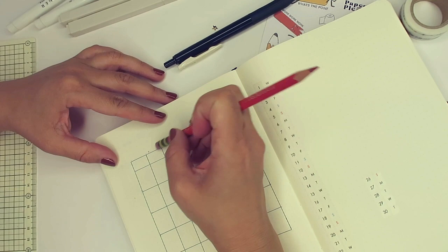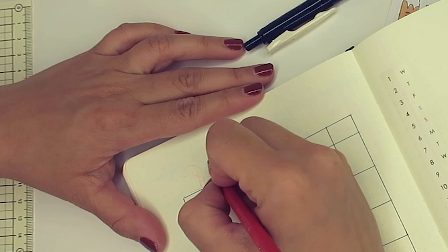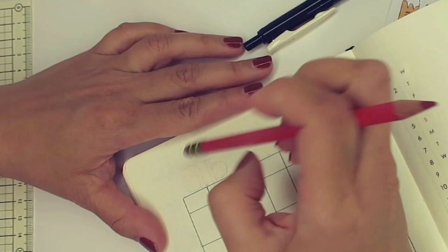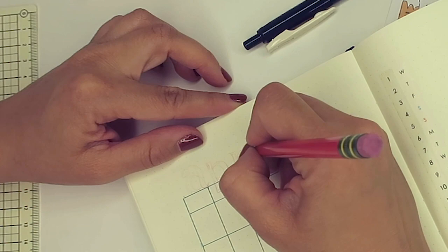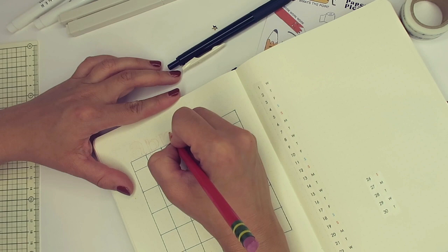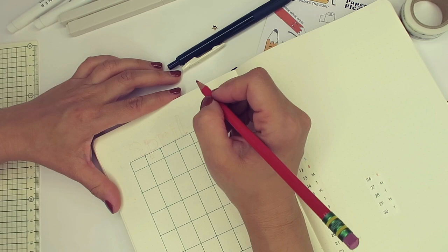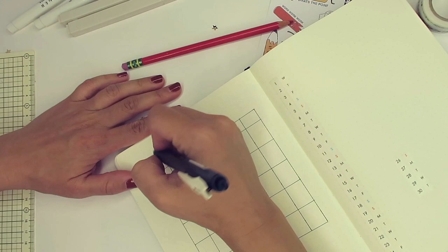I am using the Leuchtturm 1917 basic black journal, and my pen is the Sarasa vintage green color. I don't know if it's called vintage green, but it's green, and I actually use this red pencil to sketch my ideas. I've been using that, and then on top of that, I just go over all the lines with my pen.